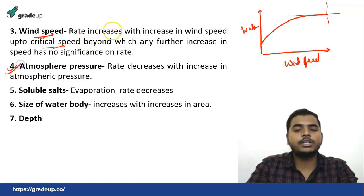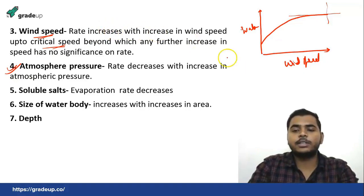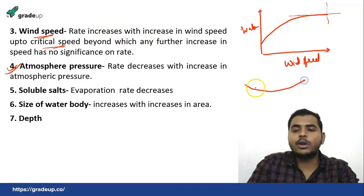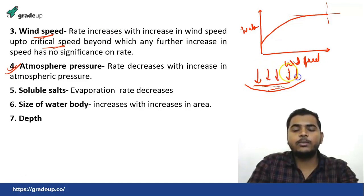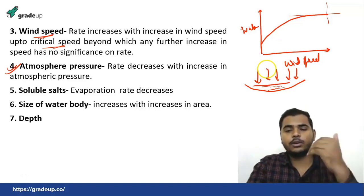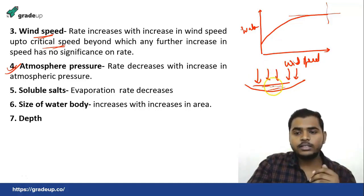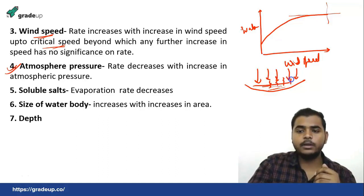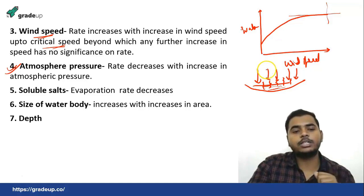The next factor is atmospheric pressure. The rate of evaporation decreases with increasing atmospheric pressure. Atmospheric pressure acts downwards on the water body, so it won't allow the water to escape from the water body. So if we go on increasing atmospheric pressure, there will be less rate of evaporation.